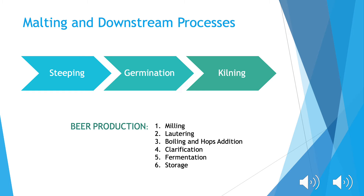This wort is then boiled and mixed with hops to add flavor, smell, and bitterness to the beer, as well as act as a preservative. Once this process is completed, the hops are removed and the mixture is clarified and cooled. The wort is now fermented with yeast for about 7 to 10 days, then the yeast is removed and the solution is now beer. The beer is then stored for at least three weeks until it is filtered and bottled.